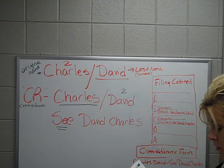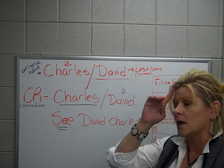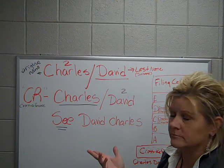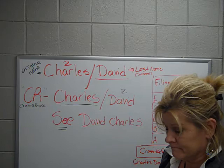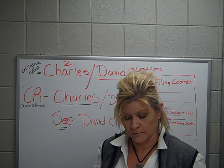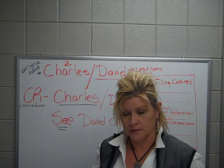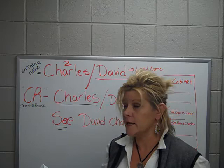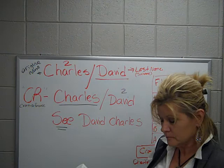Looking at personal names, number one is unusual or easily confused names like Charles David. You may not know which one is his first name and which is his last by looking at it. When determining the last name or surname is difficult, use the last name written as the key unit on the original record. Prepare a cross-reference with the first name written as the key unit. On the original correspondence for Charles David, David — the last name — is the key unit, and Charles is the first name, which is the second unit.